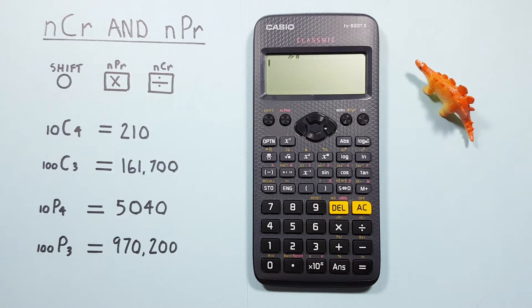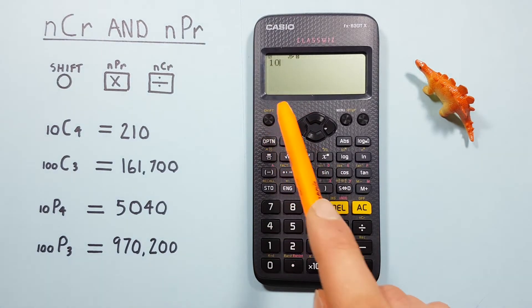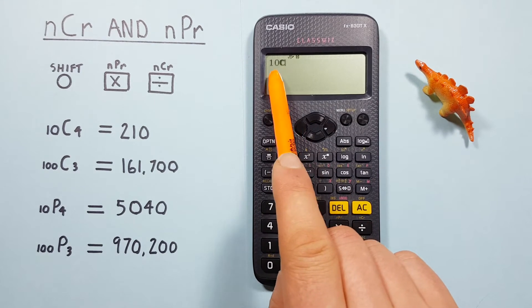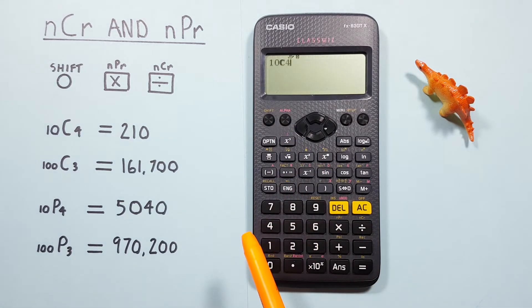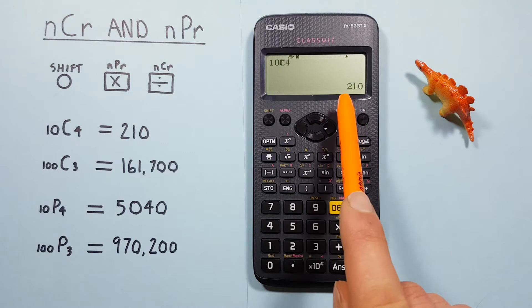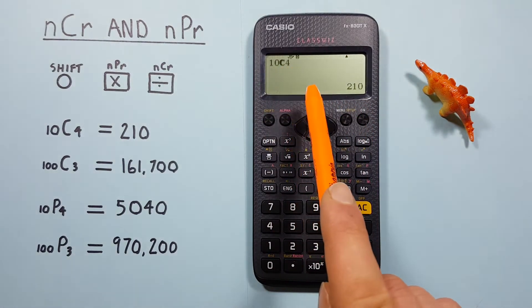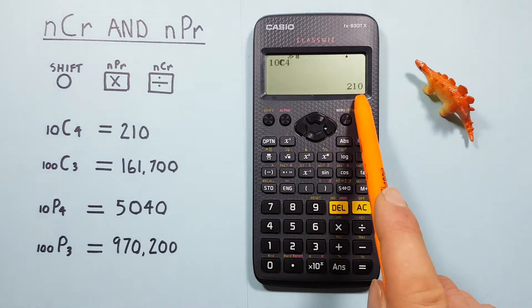We can solve it by pressing 10 on our screen and then shift the division key, which has the shift function of combinations. We see that C appear and then press 4 and equals and we see we get a result of 210. So 10 choose 4 combinations is equal to 210.